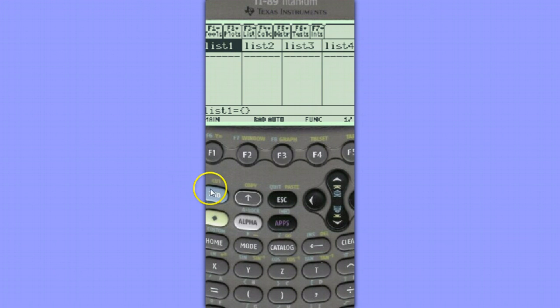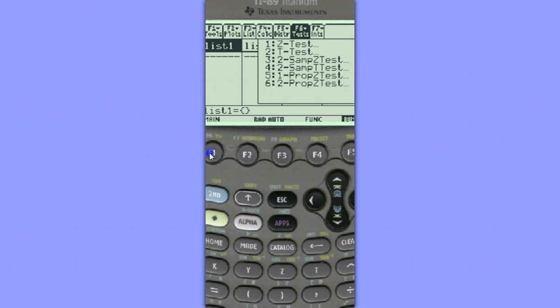Another option is we could have chosen to draw the Chi-squared distribution with the p-value shaded. To do this, hit second, F1, once again to access the F6 menu, choose option 8, Chi-squared 2a.